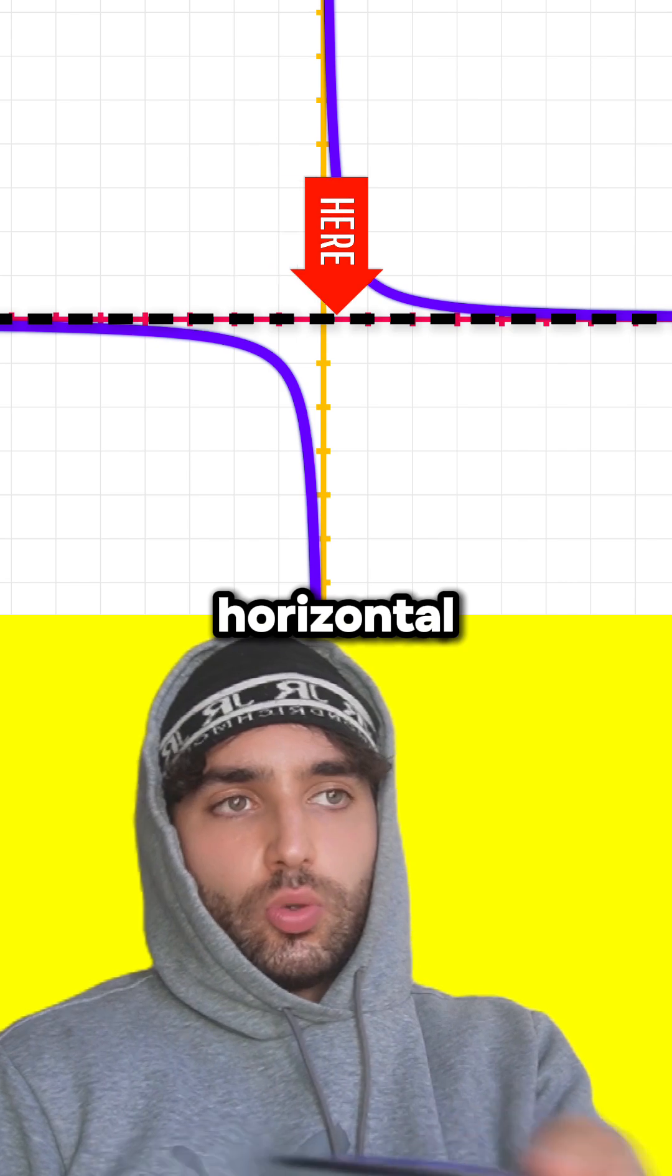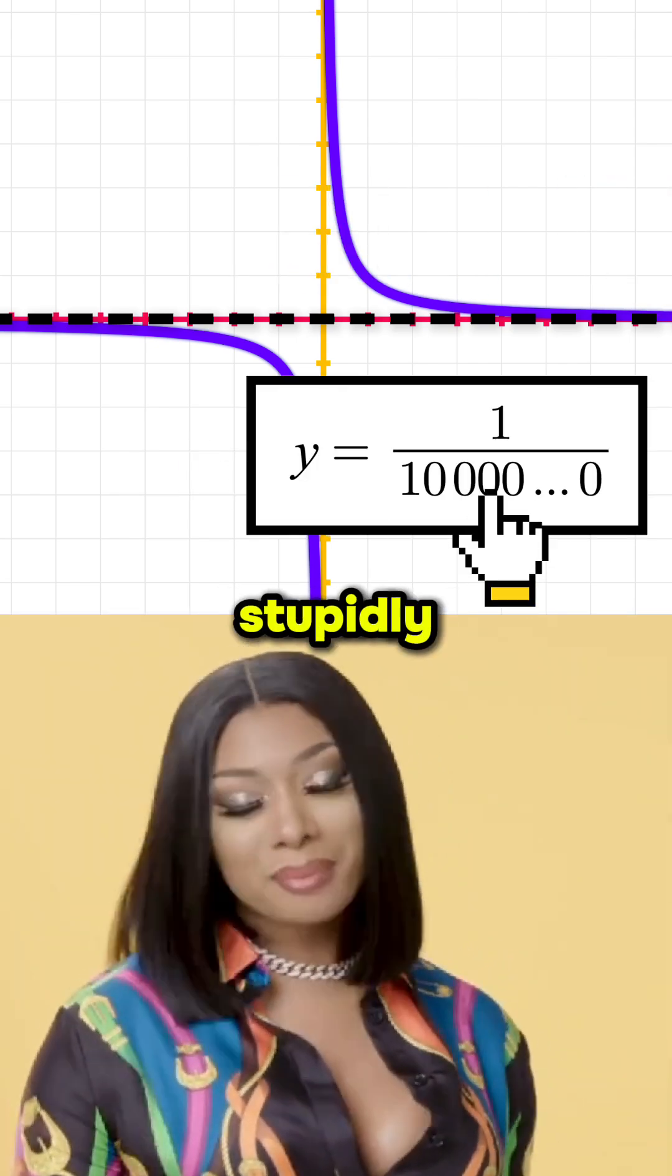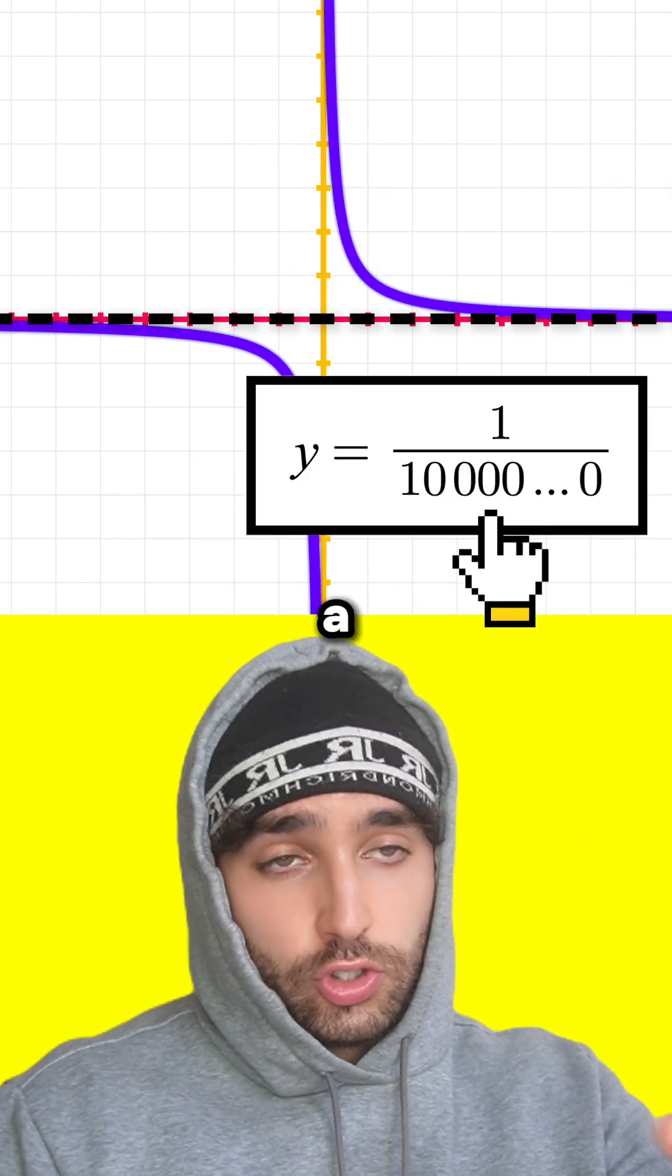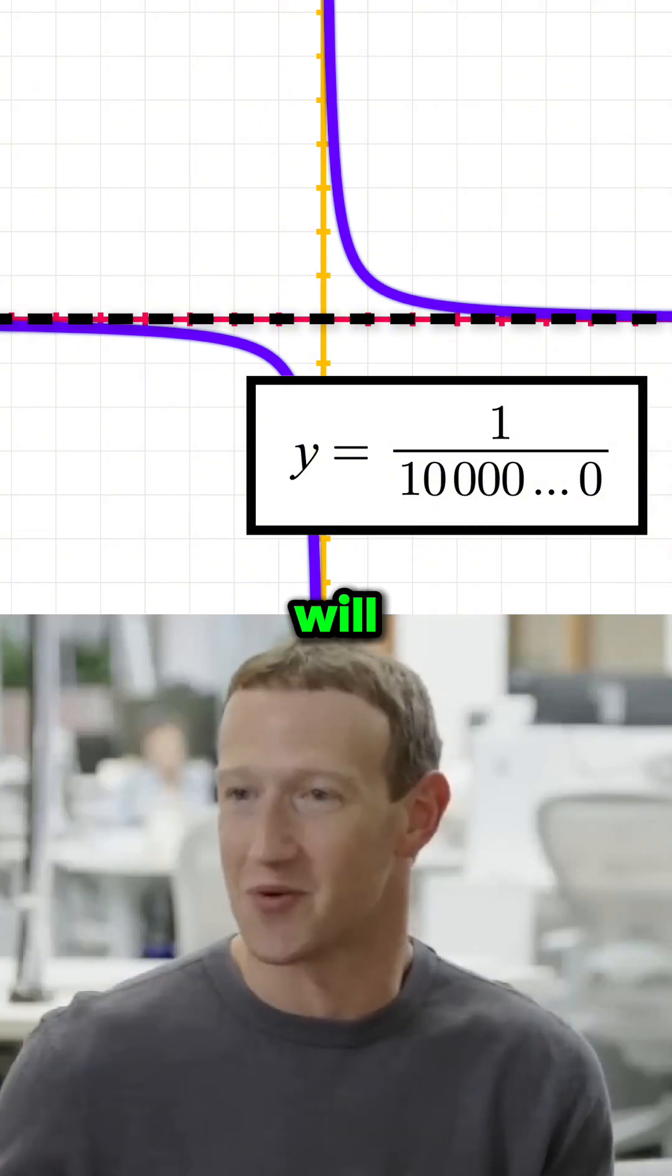So how does that horizontal one work? Think about what happens to y when x becomes a stupidly big number. It becomes 1 over a stupidly big number. Yes, so y will become stupidly small.